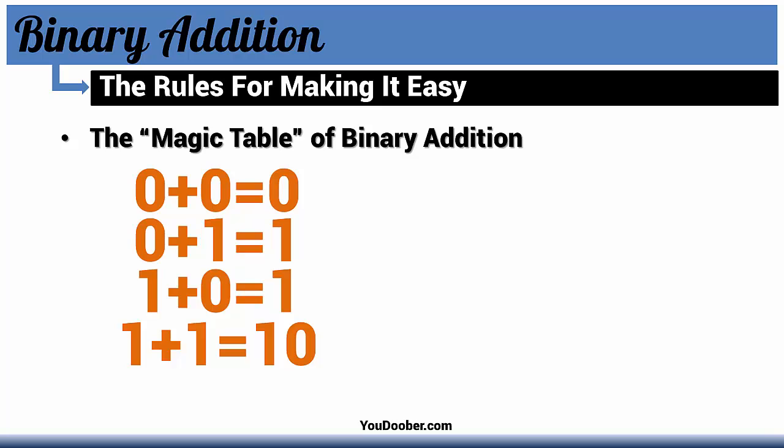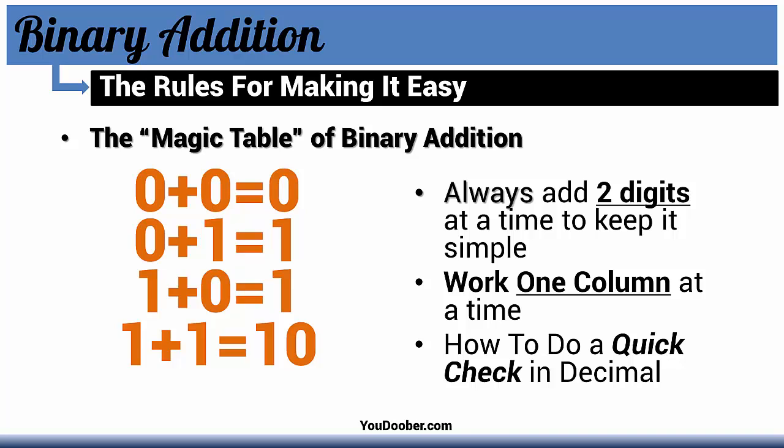Some of the other things we're going to follow is we're always going to add two digits at a time to keep it simple. We're always going to work in one column at a time and we're going to do a quick check in decimal just to check our work.